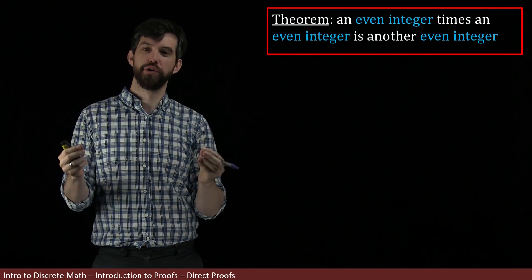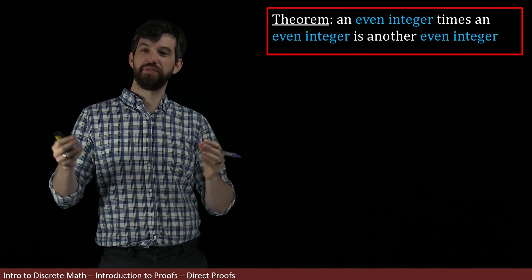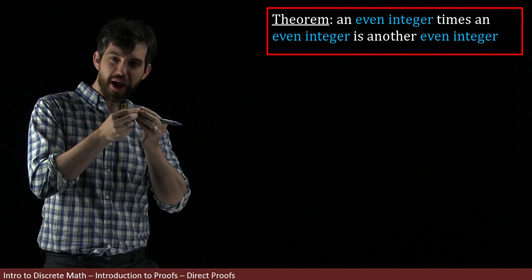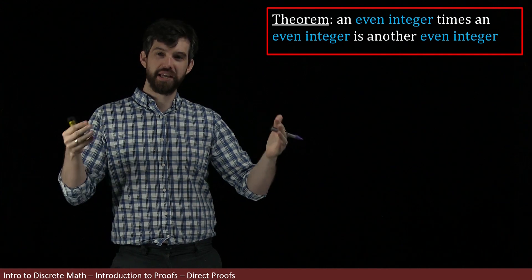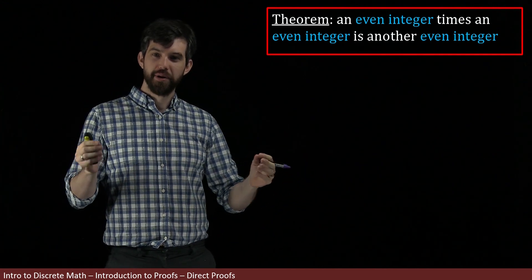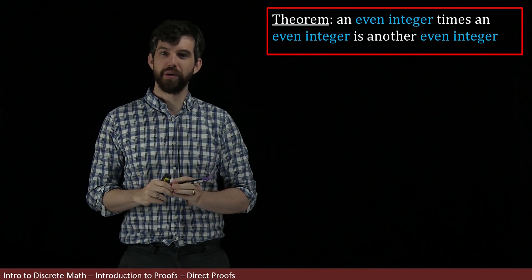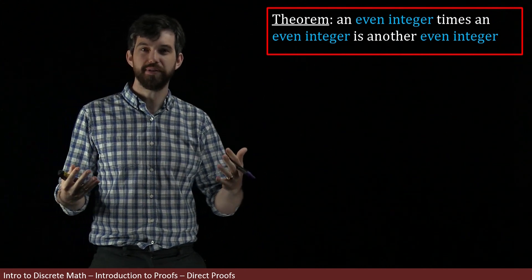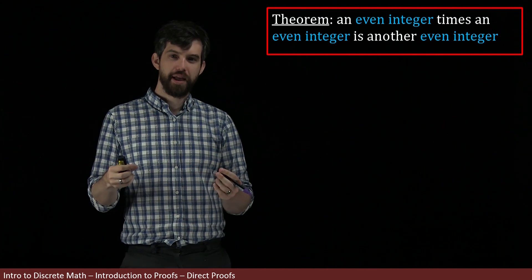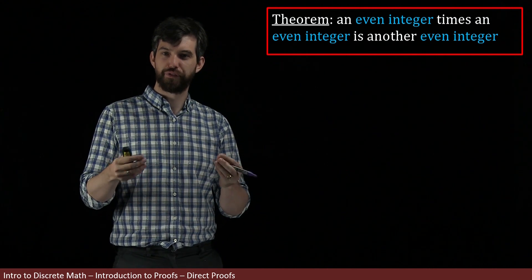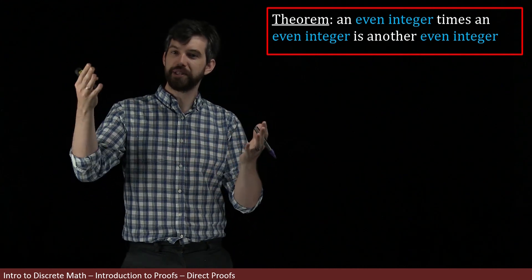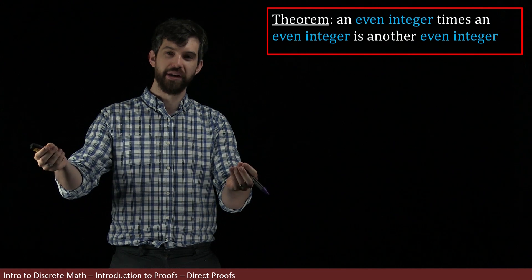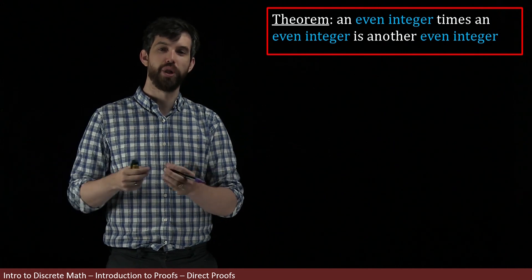In this video we are going to prove a theorem. It's a relatively straightforward theorem: if you have two different even integers and you multiply them together, then what you get out is going to be an even integer as well. But the real point of this video is not this particular theorem, but looking at how do we prove things — what is our process, what mental steps do I go through, and how do I present it in a way that is convincing and compelling for everyone else to read and follow along my proof?